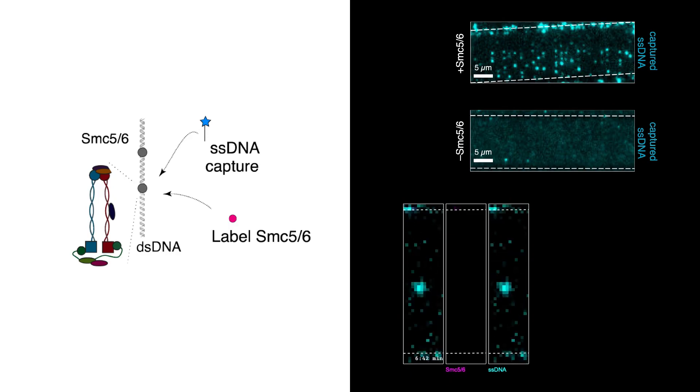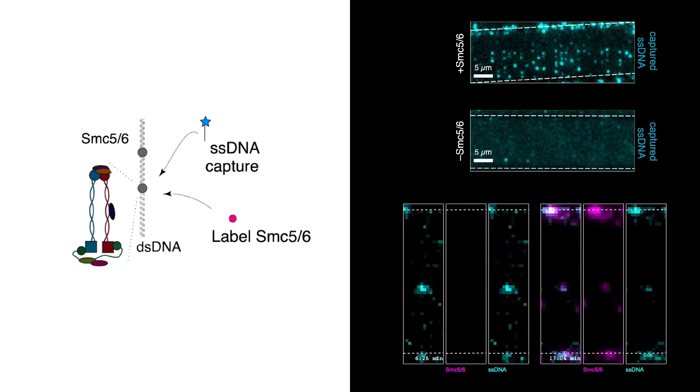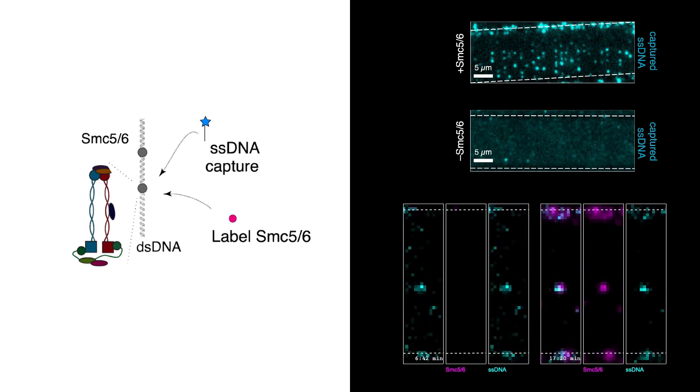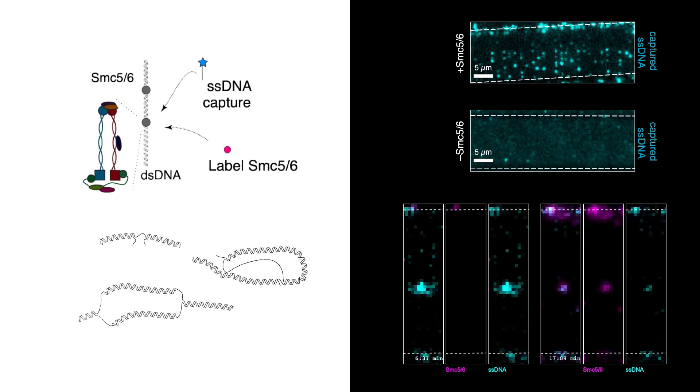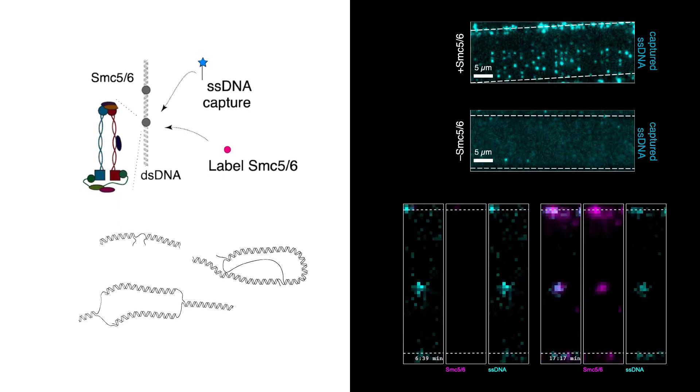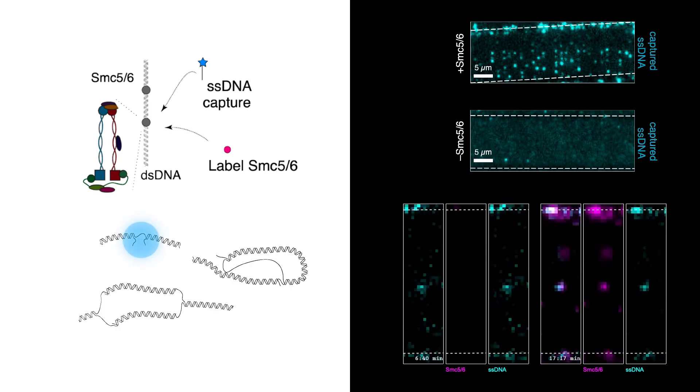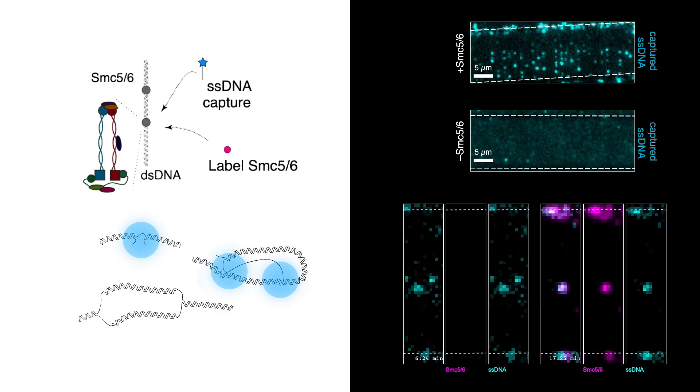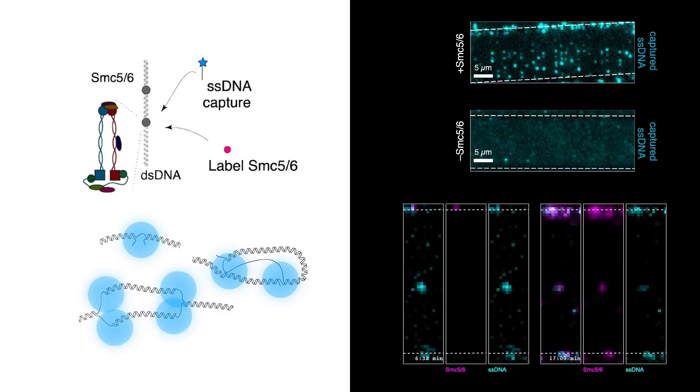When we add the second labeling reaction, we can see that we get the recruitment at exactly the same spots where SMC56 sits. So this tells us that SMC56 can bind single-stranded and double-stranded DNA simultaneously. And interestingly, this is exactly the substrates that SMC56 acts on under natural conditions, namely these lesions, and also in D-loops and in replication forks.